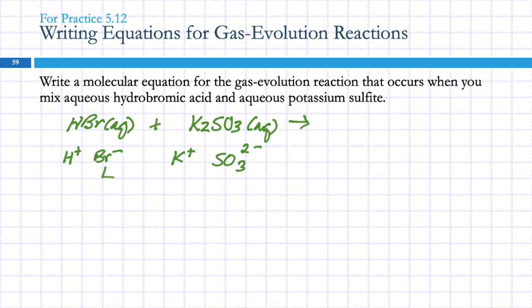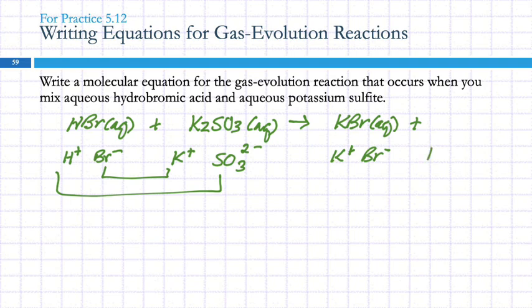And then we're going to swap the partners. So we're going to get KBr and H plus with the sulfite. So that would be H2SO3. That's one of those guys.